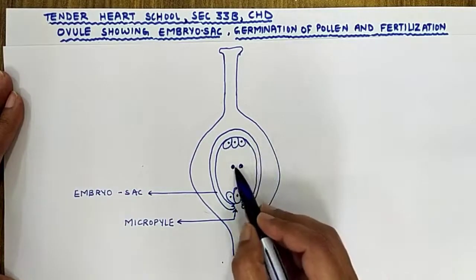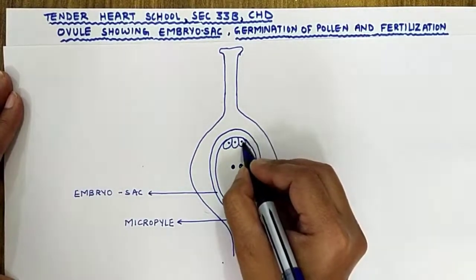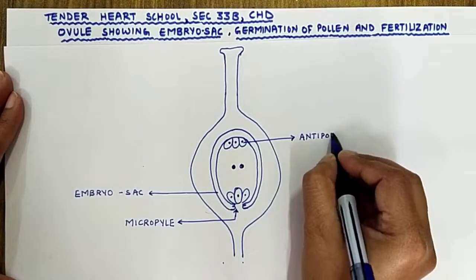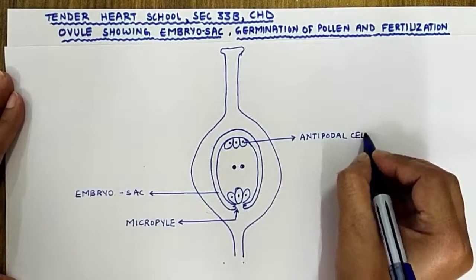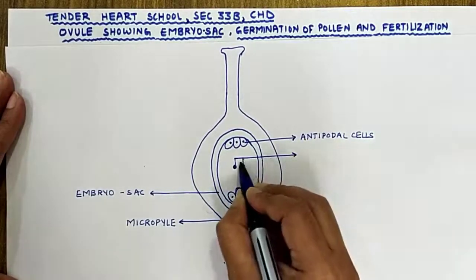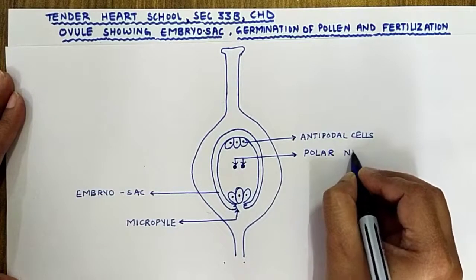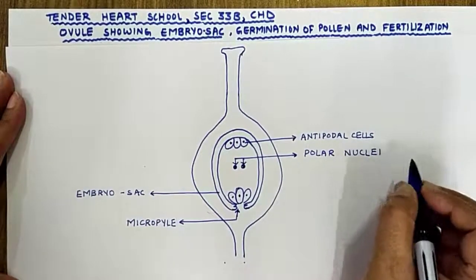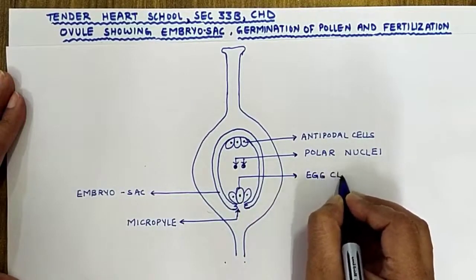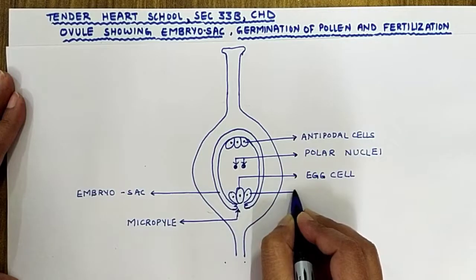Three antipodal cells, two polar nuclei, one egg cell, and two synergids. So let us label these. These are antipodal cells. These two are the polar nuclei. This one is the egg cell, and these two are the synergids.